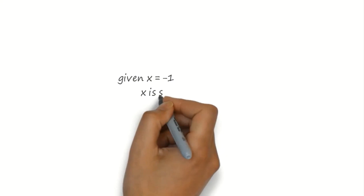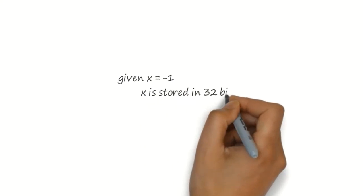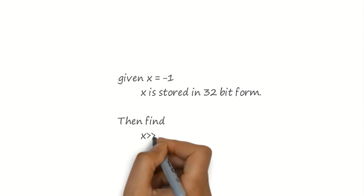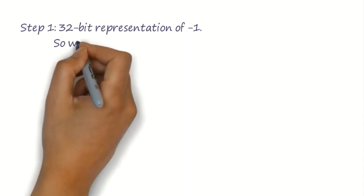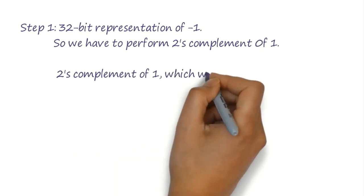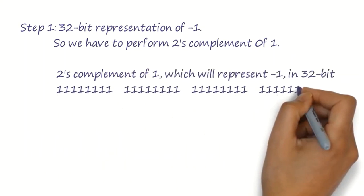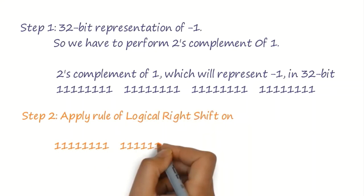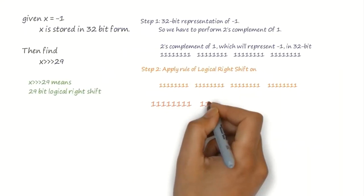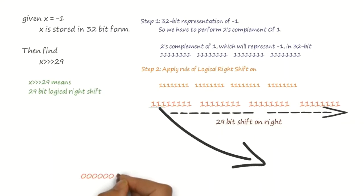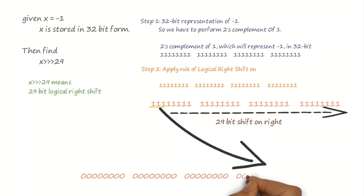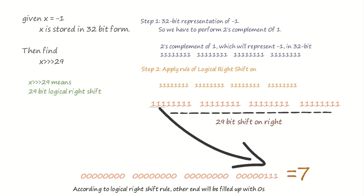Now, consider a problem where X is minus 1 and it must be represented in 32-bit format. We have to find logical right shift on X by 29 bits. So, step 1 will be 2's complement representation of minus 1 in 32-bit. Step 2 is to follow the rules of logical right shift where right 29 bits will be lost. 3 ones remaining at extreme left will be moved to extreme right and all the other bits will be filled up by zeros. It will result in 7.